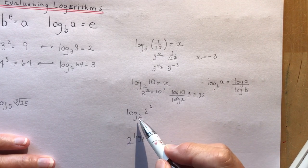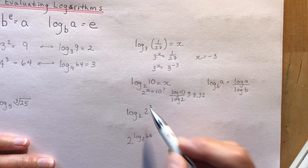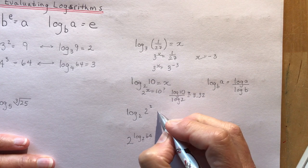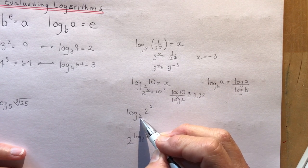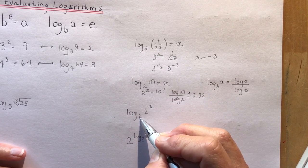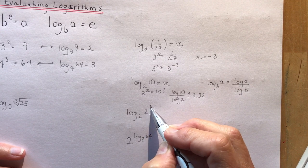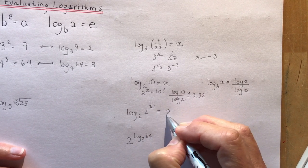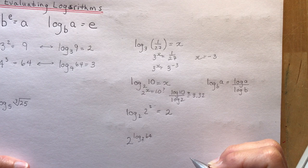Log base 2 of 2 squared — there are a lot of 2s here, but the question is simply: what do I raise 2 to in order to get 2 squared? The answer is simply 2.